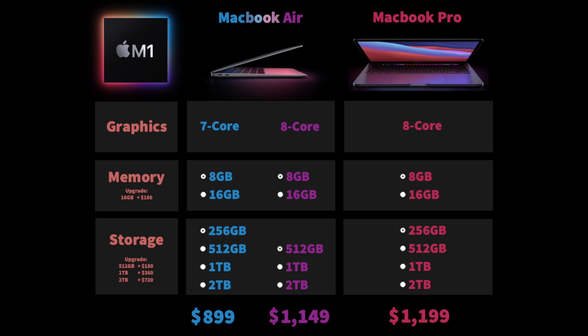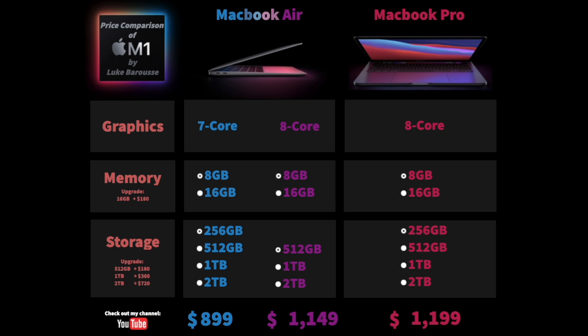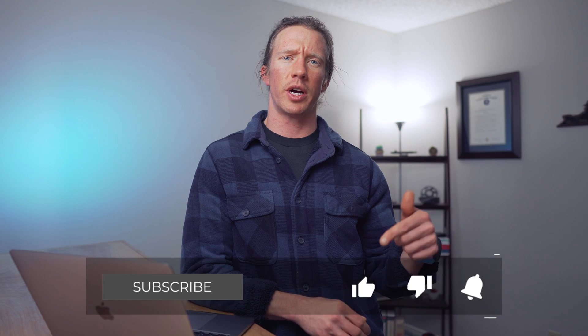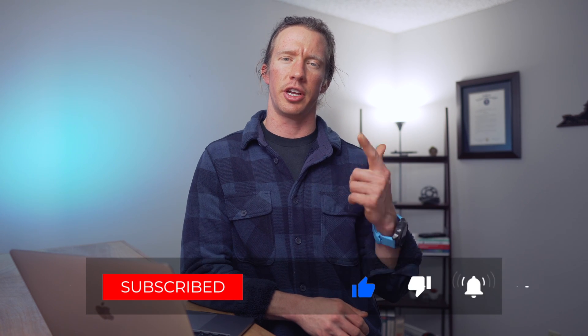For the average data analyst or data scientist using Excel, Python, and common applications — and trying to save money — I recommend the MacBook Air with the seven-core GPU, eight gigabytes of RAM, and 256 gigabytes of storage. If you do have extra cash and want to upgrade any component, the first thing I'd upgrade is the RAM. Then base other upgrades on your specific needs: if you're doing extended data analytics, consider the Pro; if you'll have a lot of files, consider upgrading storage. Let me know if you have any questions in the comments below — smash that like button and I'll see you in the next video.